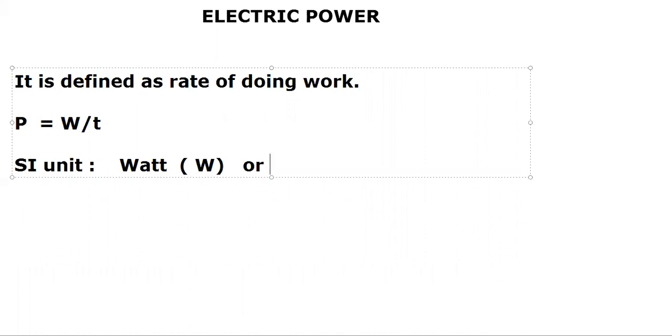The SI unit of power is Watt, or you can write it as Joule per second — since work is in Joules and time is in seconds, so the SI unit is Watt (J/s).